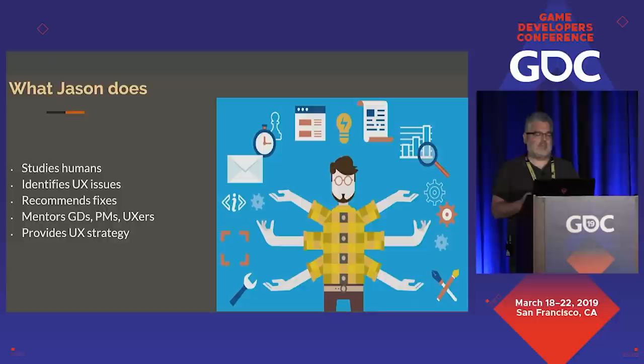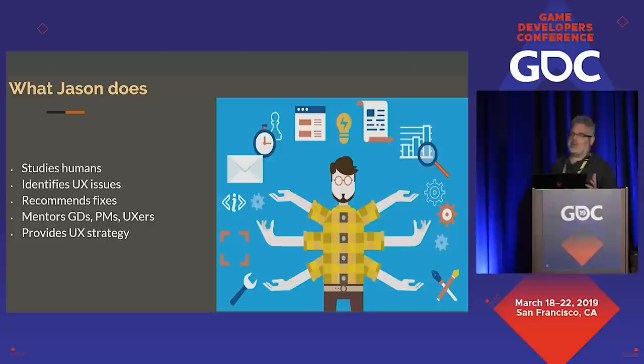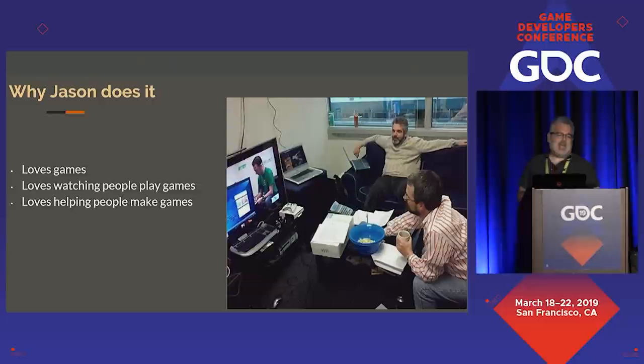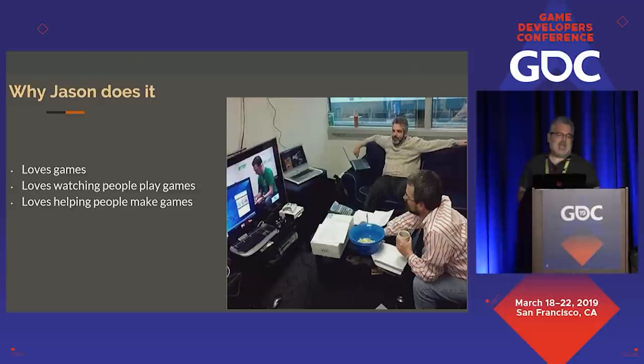The things I do: I study human beings, I like watching people do things, I identify user experience issues, I recommend fixes to teams, I mentor game designers, PMs, and UXers, and provide strategy to mesh your business and creative goals with your actual user experience — the way people perceive and interact with things. The top reason I do it is probably the same reason you're all in it: we love games. I love watching people play games, and I love helping people make games. I'm not the person with the idea for the next great game, but I love helping people achieve their goals.